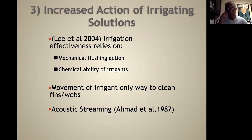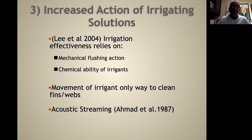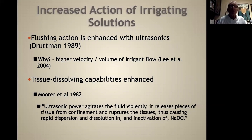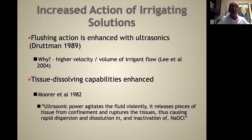Irrigation is a big thing in endodontics today — it has gone from passive irrigation to hydrodynamic irrigation, and we like to use ultrasonics. Irrigation effectiveness relies on two factors: mechanical flushing action and chemical activity of the irrigants. Movement of the irrigant is the only way to clean webs and fins, done by the principle of acoustic streaming. Flushing action is enhanced with ultrasonics because of higher velocity and greater volume of irrigant flow. We're able to get into all the lateral and accessory canals, webs, fins, and anastomoses. With nickel-titanium instrumentation achieving at least a 30.04 shape, ultrasonic power agitates the fluid violently, releases pieces of tissue from confinement, and ruptures tissues, causing rapid dispersion and dissolution.